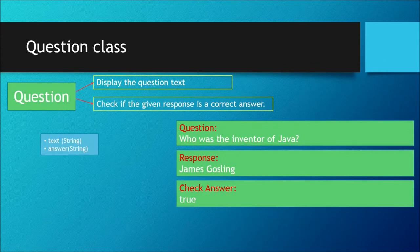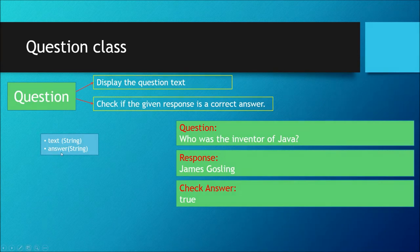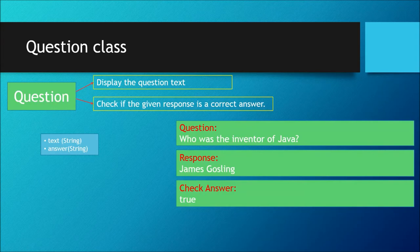When we talk about a question, you need to have two things. One is the question itself — that is the text — and that's going to be of type String, because your question is going to be a string, like 'Who was the inventor of Java?' And then the correct answer, which is again going to be a String, like 'James Gosling.' These are the two private instance fields that a Question class would have.